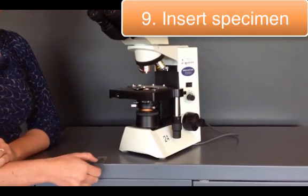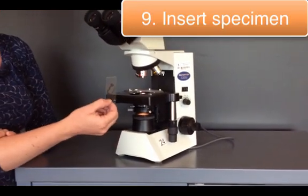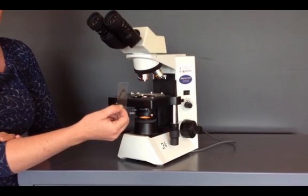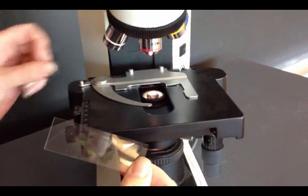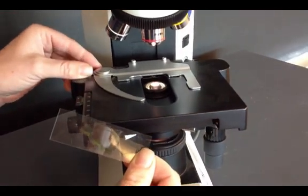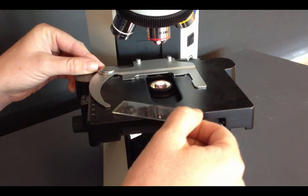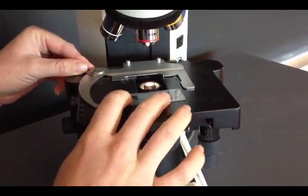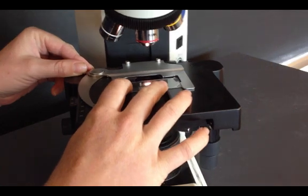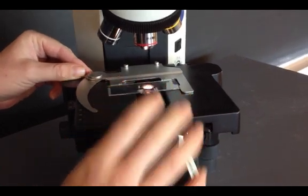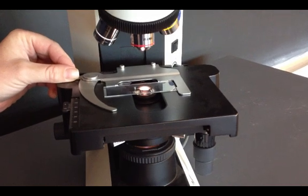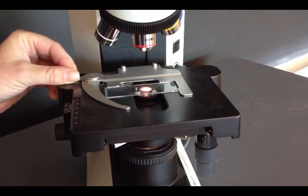Then you're ready to put your slide in. Grab your slide on the side, being careful because they are glass. Then open the slide holder and gently push your slide into the back of the microscope. Slowly let the slide holder close. If you just let the slide holder go, it may slam against the slide and crack the glass.